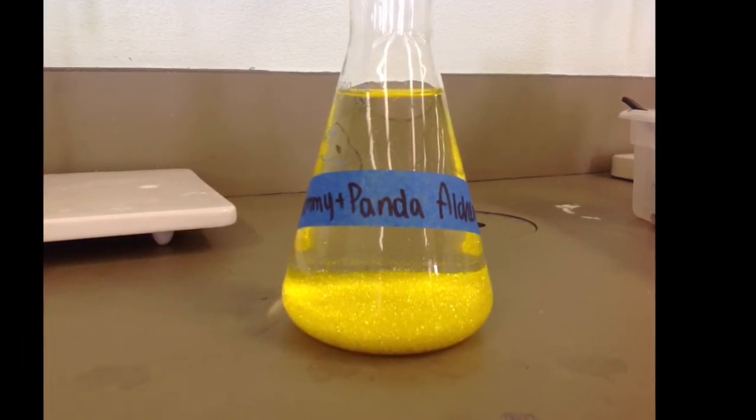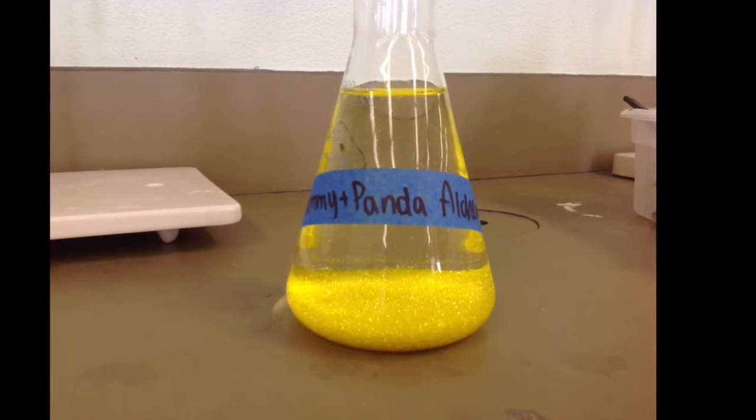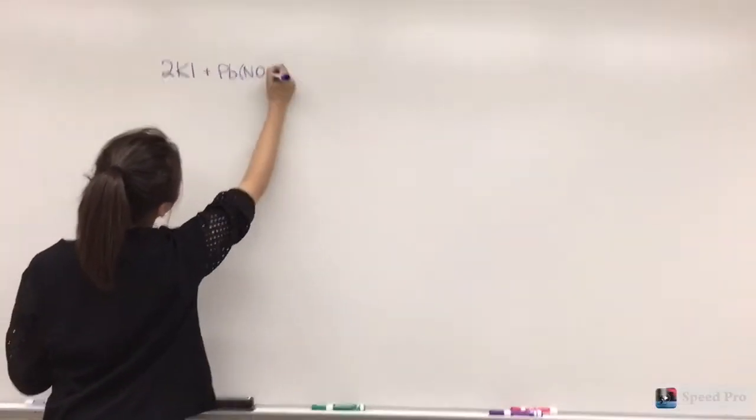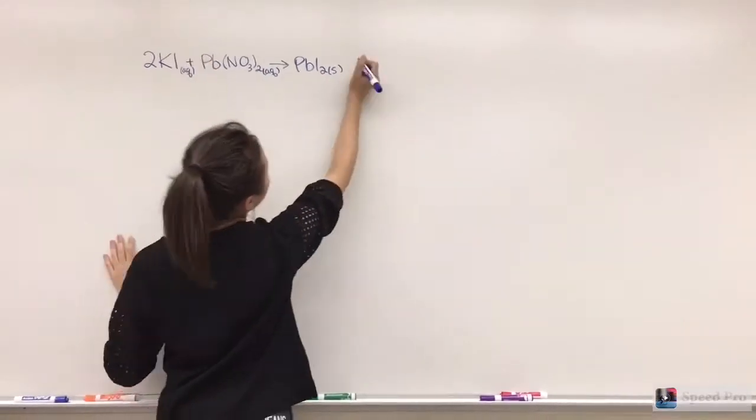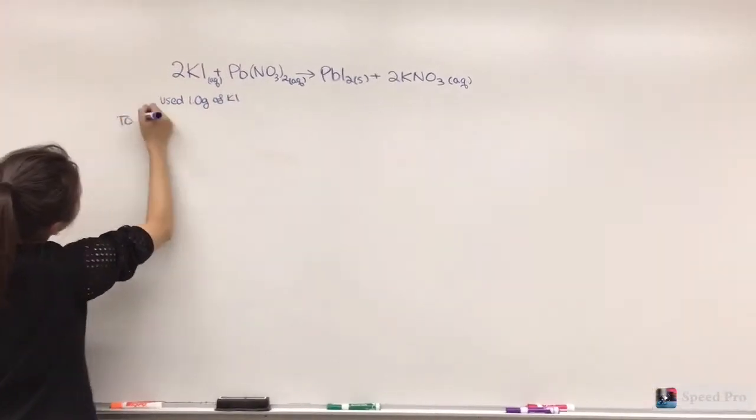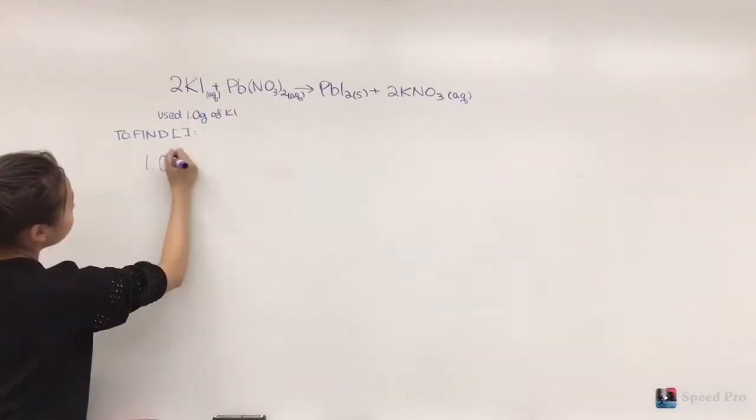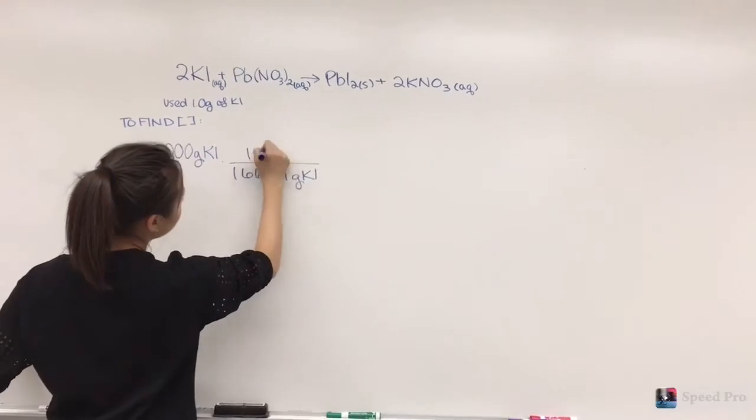In the double replacement reaction that is the basis of the experiment Golden Rain, two moles of aqueous potassium iodide reacted with one mole of aqueous lead-2 nitrate to form one mole of solid lead-2 iodide and two moles of potassium nitrate. It was important to make sure the potassium iodide was in excess to ensure that all of the lead reacted.